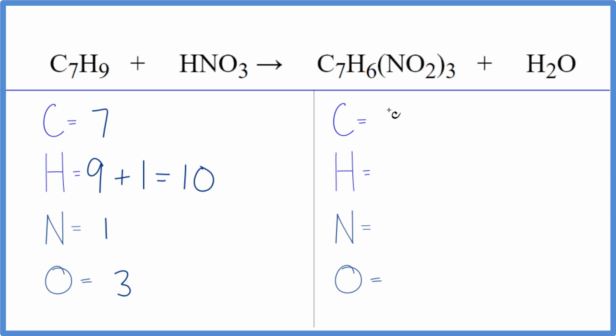On the product side, we have the 7 carbons again. Hydrogens, we have 6, plus these 2 here. So we have 8 hydrogens, and then nitrogens, we have 1 nitrogen here, but this 3 applies to everything in the parentheses. So we have 3 times 1, 3 nitrogens.